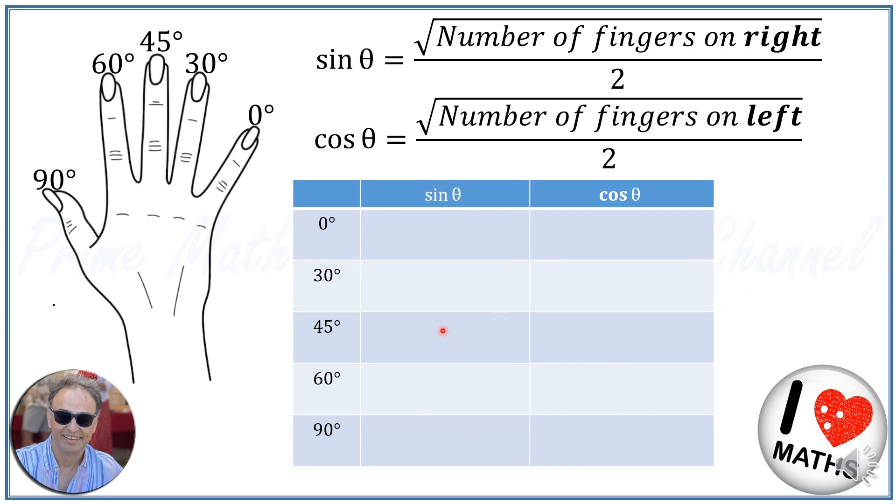To find the value of a specific angle, count the fingers. For example, to find the sine of 30 degree, count the fingers on the right. We have only one finger on the right, so sine of 30 degree will be square root of 1 over 2, or simply 1 over 2.